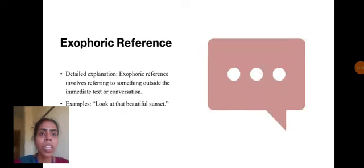Third is exophoric reference, which involves referring to something outside the immediate text or conversation. That is, suddenly telling something which is out of context, like 'look at the beautiful sunset.'